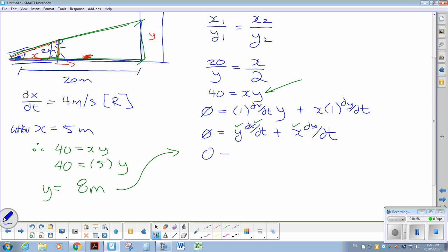0 equals 8 times 4 plus 5 dy/dt. Now we can find the rate of change of the shadow. Negative 32 equals 5 dy/dt. dy/dt equals negative 32 over 5 meters per second.